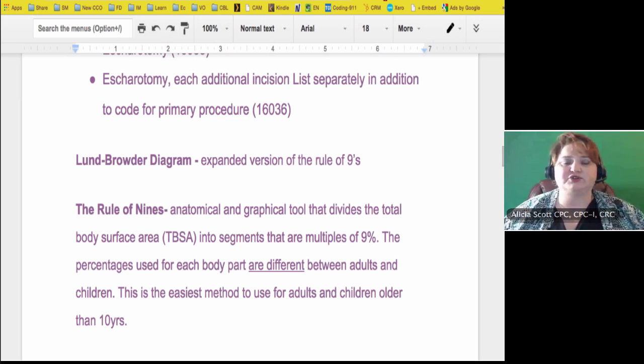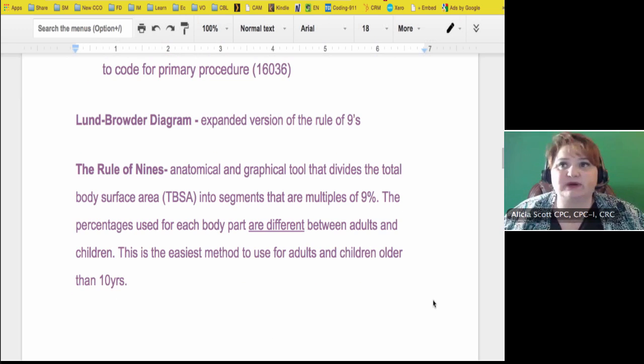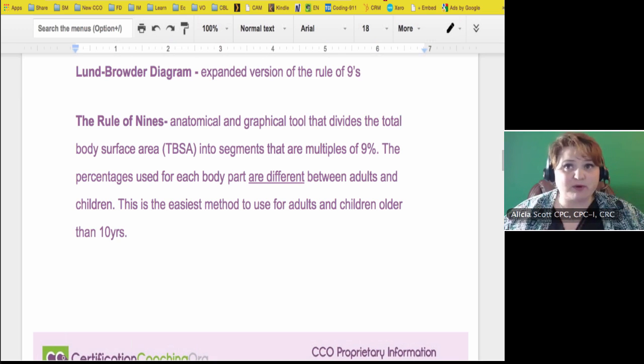It's very simple. Let's talk about the rule of nines because that's the basics and it's not as hard as you think when you look at a diagram. What it does is it takes the anatomical site and uses a graphical tool to integrate the total body surface area or the TBSA, which is an abbreviation you'll see a lot, to divide it up into segments of nine. So one arm is a nine, the other arm is a nine, one leg is a nine, like an 18, 18 and stuff like that. Everything is divisible by nine. The percentages used for each body part are different between adults and children. This is the easiest method to use for adult and children older than 10 years old.